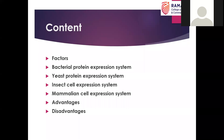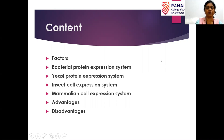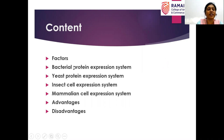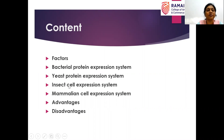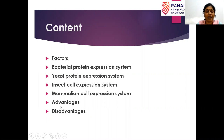The content we will be discussing in today's class: first, the factors we need to consider when we go for the expression of recombinant protein; then what are the different protein expression systems available — we have bacterial protein expression system, yeast protein expression system, insect cell expression system, and mammalian cell expression system. Depending upon the type of protein you are trying to express, we use different types of expression systems. At the end we will also see the advantages and disadvantages of each.